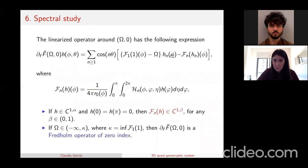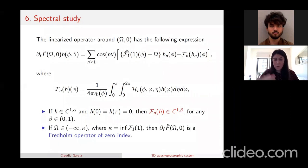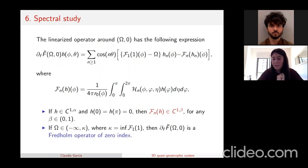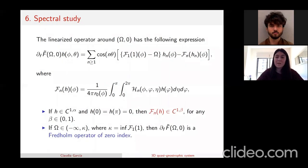Since the linearized operator is Fredholm of index zero, the dimension of the kernel equals the co-dimension of the range. So if we check that the dimension of the kernel is one, automatically the co-dimension of the range is also one. I will now focus on studying the dimension of the kernel. To do so, we compute the integral in eta using the Gauss hypergeometric function.